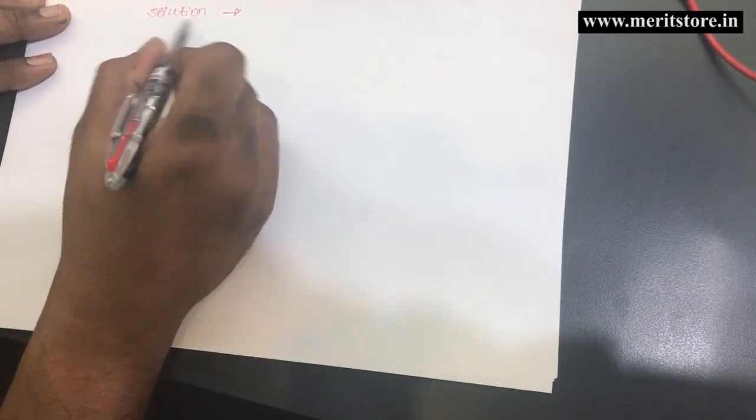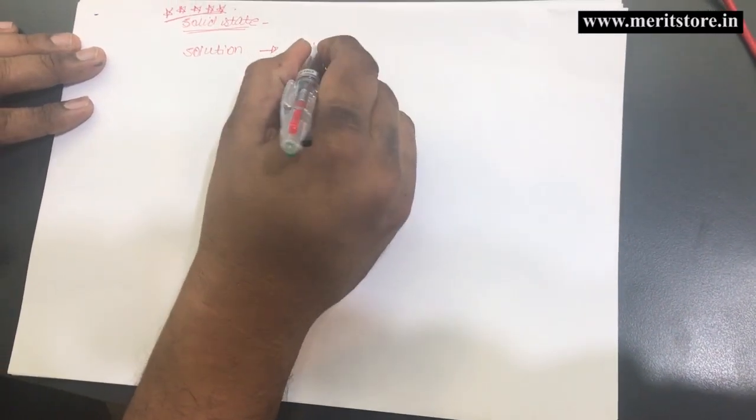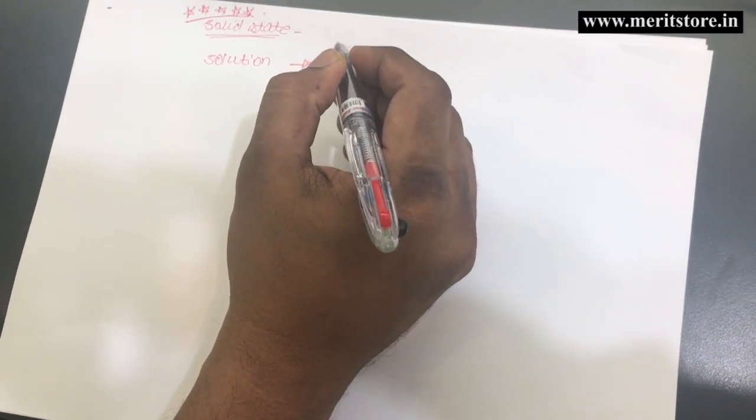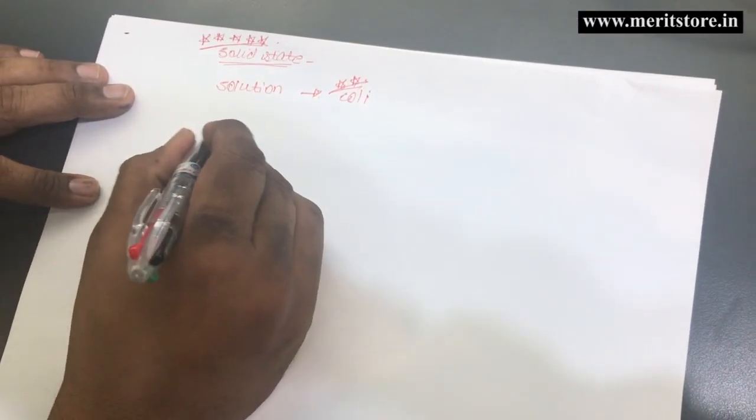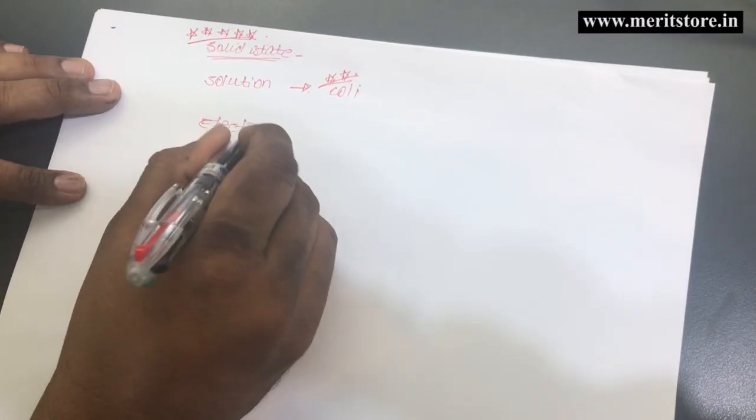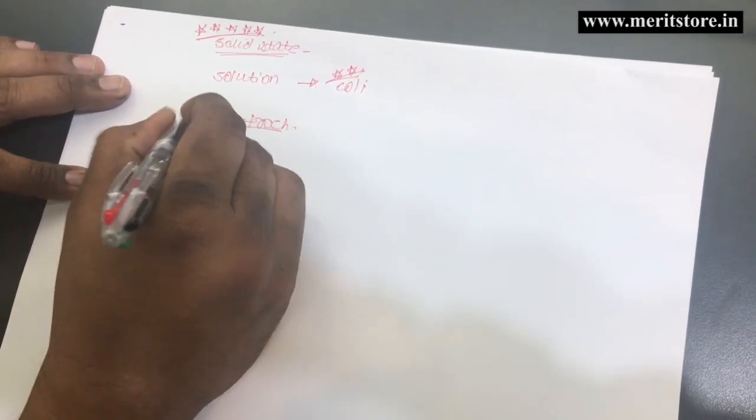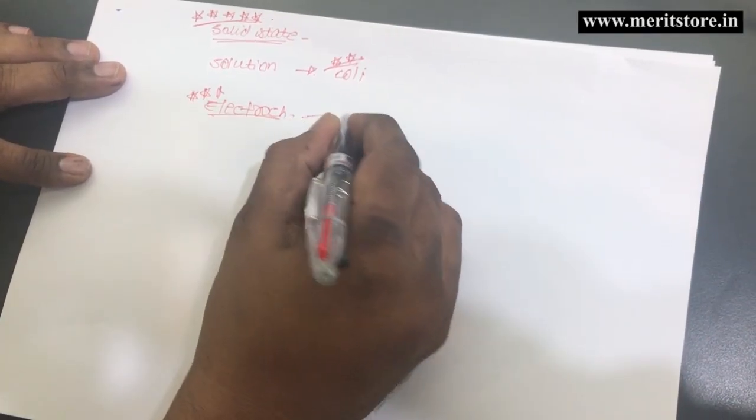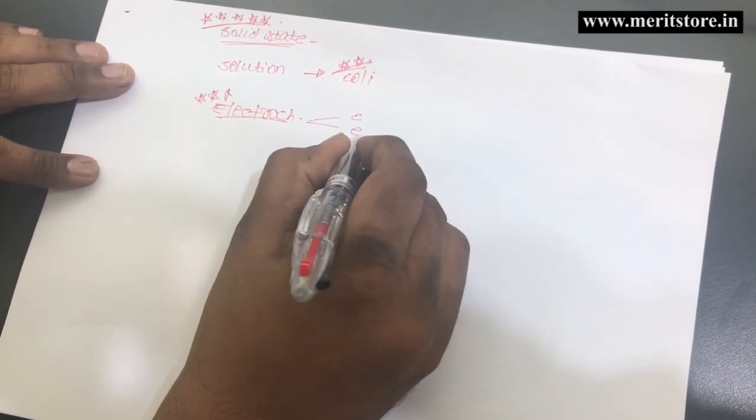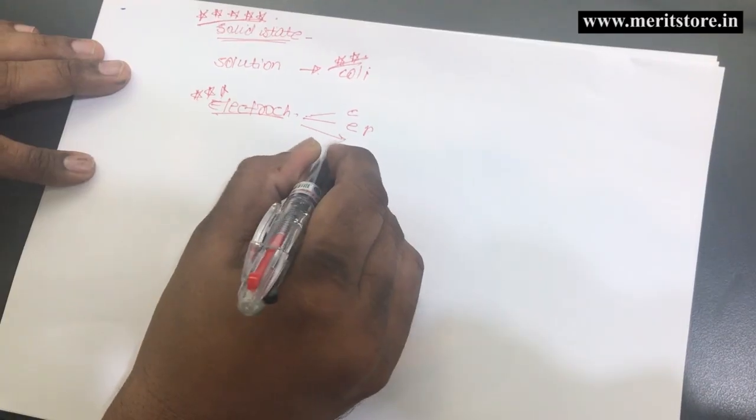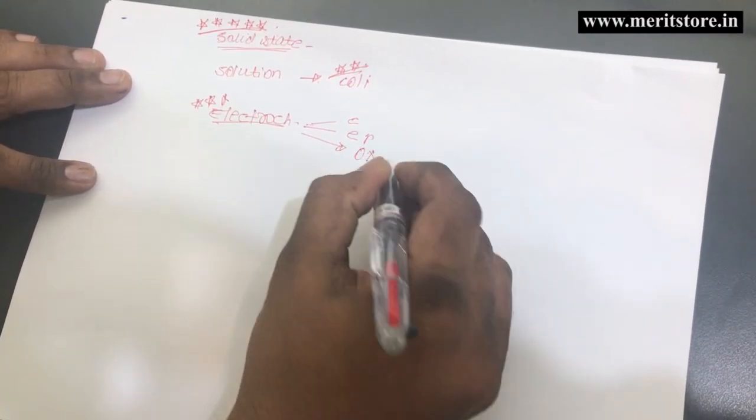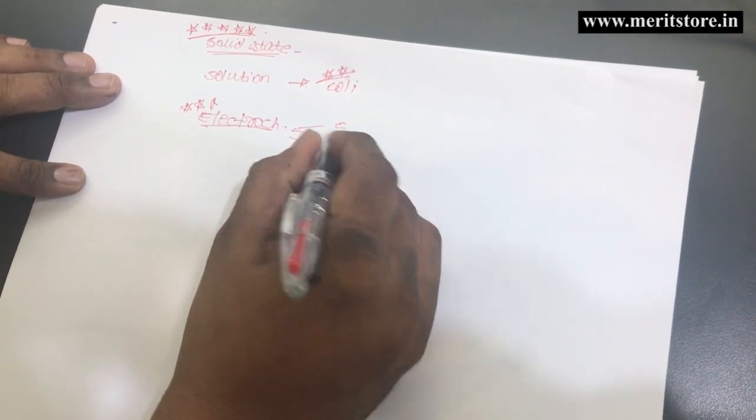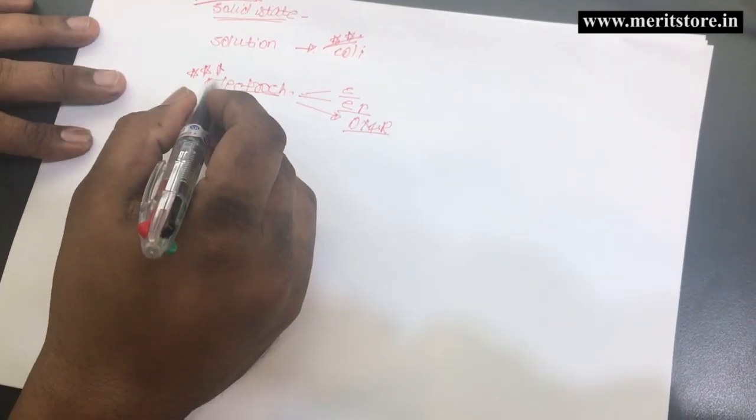In the topic of solution, the colligative property is super duper important - that's something you don't want to miss. In electrochemistry, everything which talks of cells, electrode potential, the comparison between oxidation numbers and reduction numbers, oxidation properties and reduction properties - all of this is important when it comes to electrochemistry.